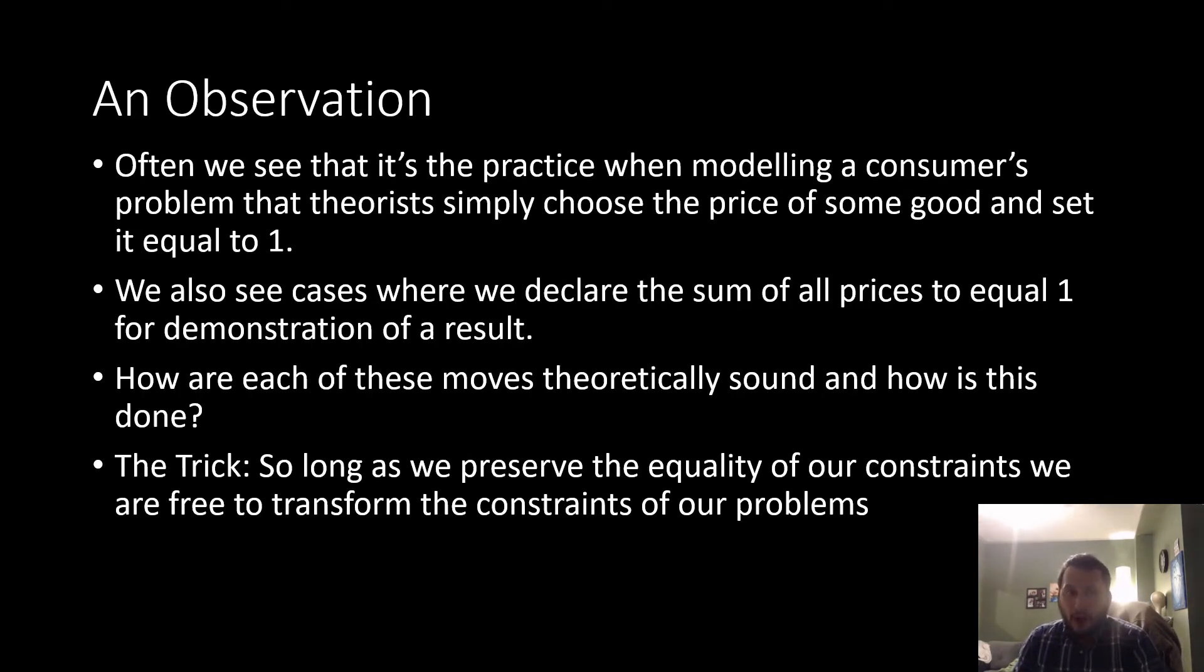Often we see that it's the practice when modeling a consumer's problem that theorists simply choose the price of a good and set it equal to one. We also see cases where we declare the sum of all prices in our economy equal to one for demonstration of a particular result. This is usually used in equilibrium existence proofs. How are each of these moves done in a theoretically sound way and how is this done practically?